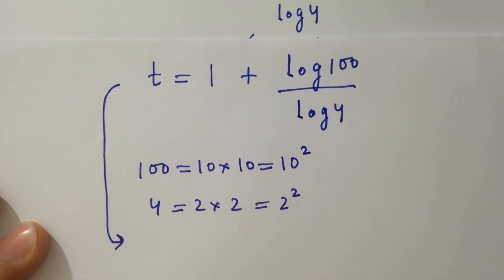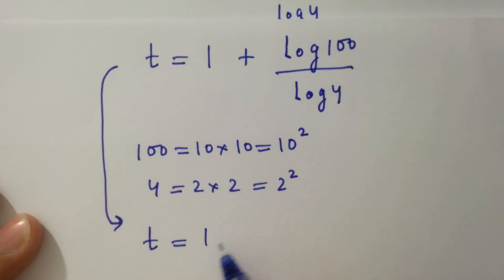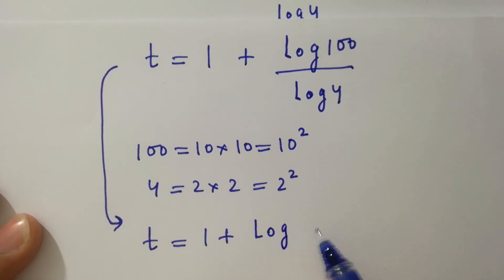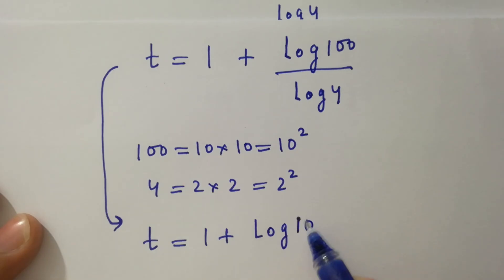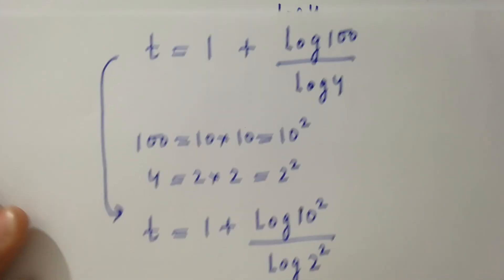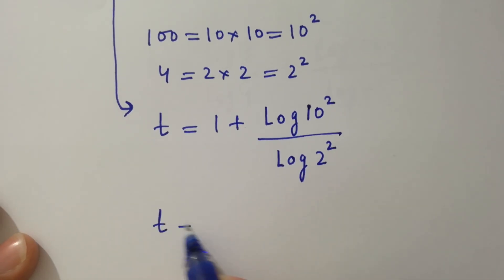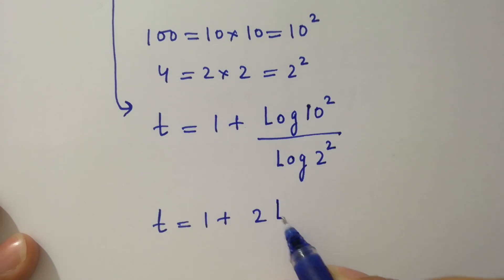So it will be t equals 1 plus log 100 over log 4, where log 100 is 10 squared.